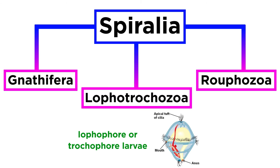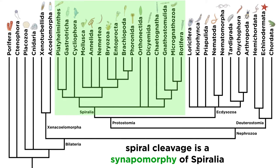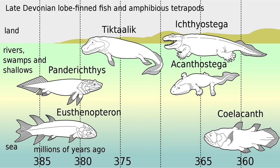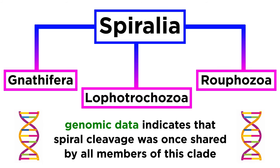Regardless of classification, since spiral cleavage does not occur outside of Spiralia, it is considered to be a synapomorphy, or derived characteristic unique to the clade, even though it has been lost in some members. This loss of spiral cleavage is somewhat like the loss of limbs in snakes and whales. Snakes and whales are considered to be tetrapods, or four-limbed animals, even though they have lost some or all of their limbs, because they share common ancestry with other tetrapod animals. More recent analyses of large genomic datasets indicate that spiral cleavage was once shared by all members of Gnathifera, Rouphozoa, and Lophotrochozoa.